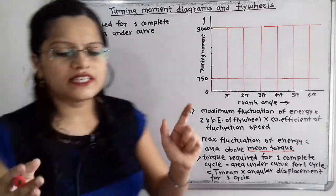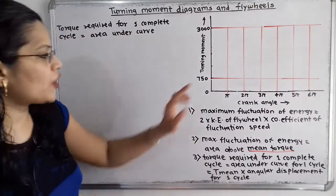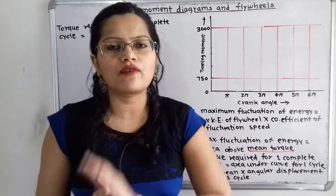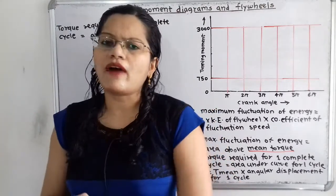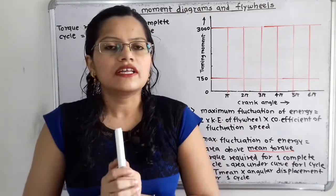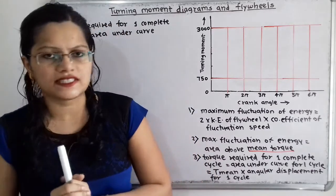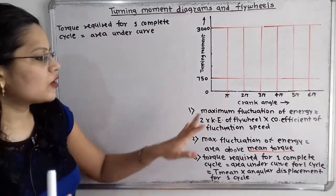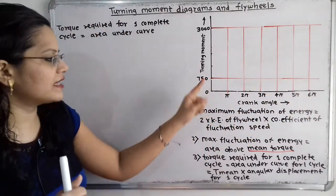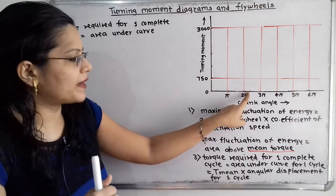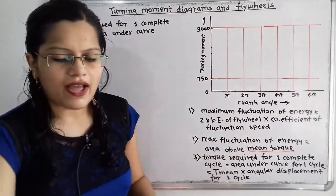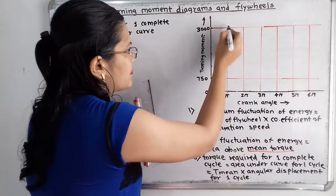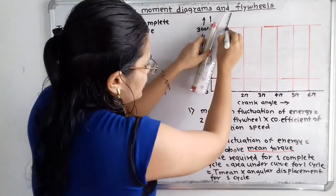During the first half revolution, the torque varies from 750 Nm up to 3000 Nm uniformly, so we draw one straight line. Half a revolution means the angle covered is 180 degrees, which equals pi. On the crank angle axis we mark 0 to pi, then 2 pi, 3 pi, 4 pi, 5 pi, and 6 pi. During the first half revolution, from 0 to pi, the torque varies from 750 to 3000 uniformly, so we draw a straight line.